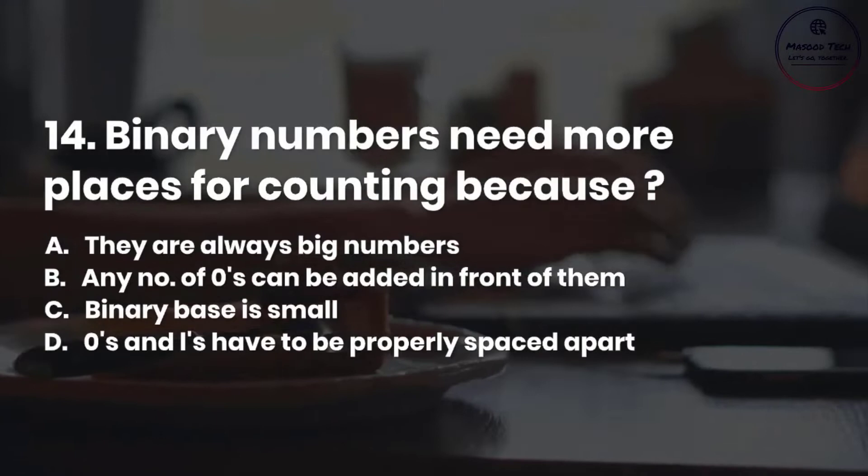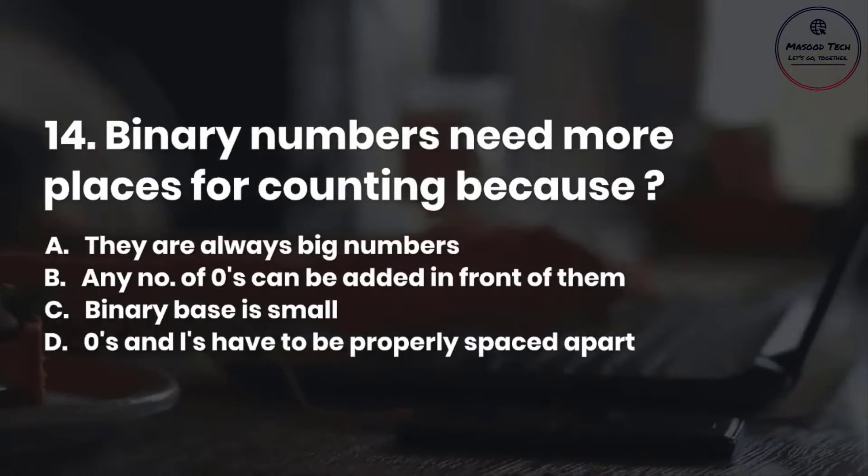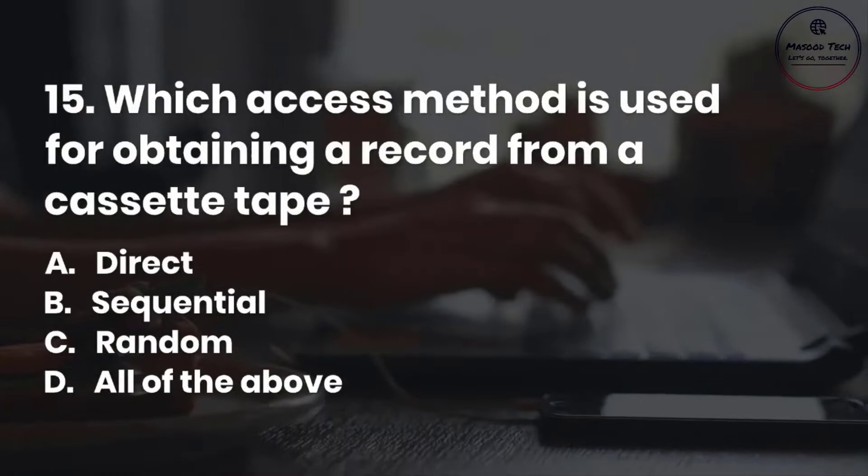Number 15. Which access method is used for obtaining a record from a cassette tape? A. Direct. B. Sequential. C. Random. D. All of the above. Correct answer is B.